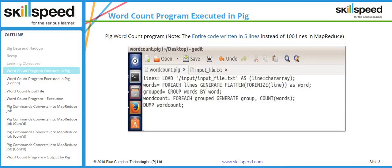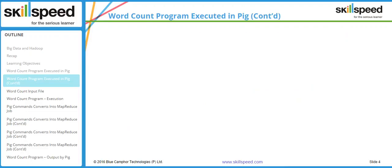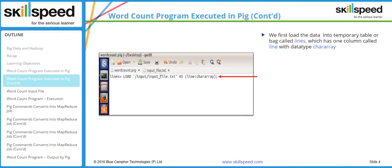Now I will explain the operation of each of these lines one by one. The first line has a LOAD operator. What happens in the first line is that we are creating a relation called 'lines', which is set equal to LOAD. LOAD is the function which will create a relation or a pointer inside Pig. We are referring to the file we want to analyze, and the location of the file is given in HDFS as chararray.